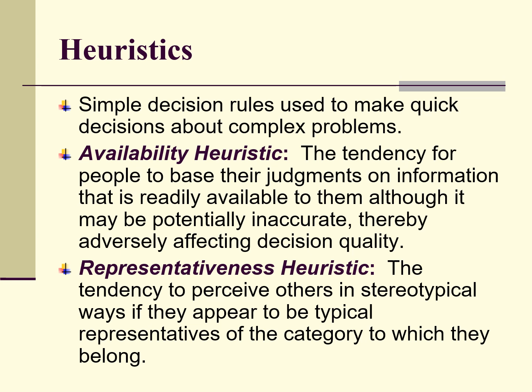The representativeness heuristic is the tendency to perceive others in stereotypical ways if they appear to typically represent categories to which they belong. This doesn't just mean people — it also applies to problems. If a problem looks stereotypical or simple, we have a tendency not to go any deeper. We tend to think, 'This is a common problem; this solution has always worked; let's apply it.' Both heuristics show why we may need to purposely and systematically gather actual data and base rates, and make sure we're not always doing the same thing simply because a problem seems stereotypical.